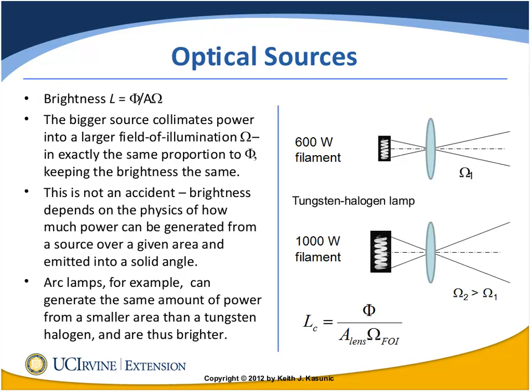The second question was about optical sources — a more powerful source may not necessarily be brighter. We have two pictures: a 600-watt tungsten halogen lamp and a 1,000-watt tungsten halogen lamp. You might say the 1,000-watt lamp is going to be brighter, but it turns out not. The 1,000-watt lamp has 400 watts more power, but power is not the same as brightness. Brightness tells us how much power is coming from a source of a certain size and into a certain solid angle.